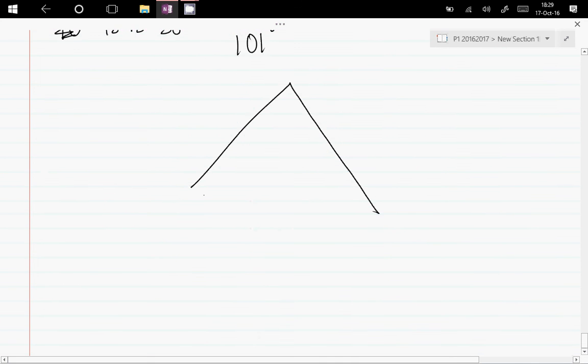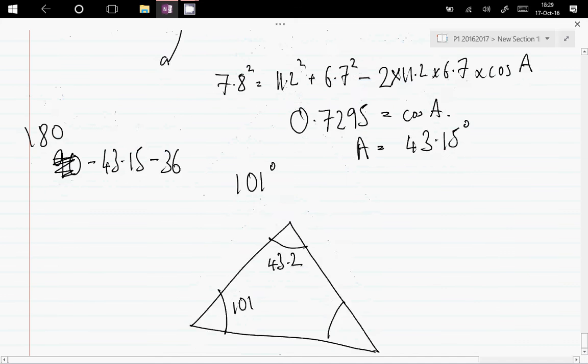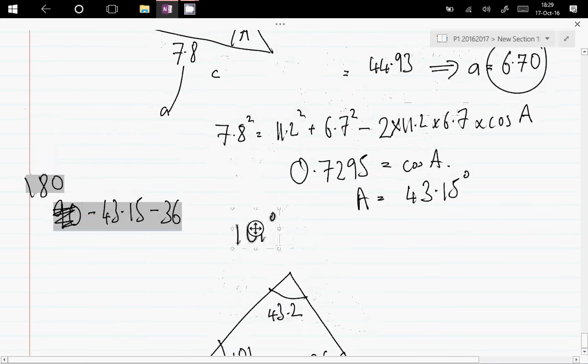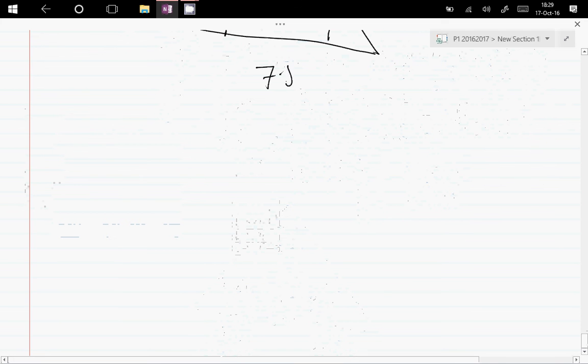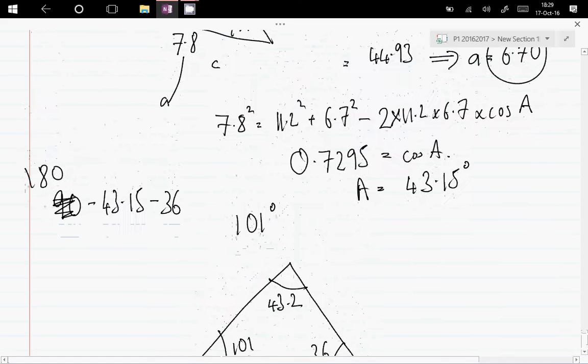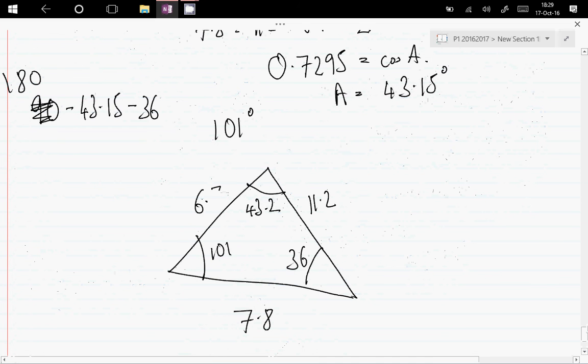So now the triangle that we were trying to solve looks like this. This one is 43.2, this is 101, this was given as 36. Notice the 0.2 is a little extra. This is 7.8 here, this is 11.2, and this is 6.7. That is how to use the cosine rule.